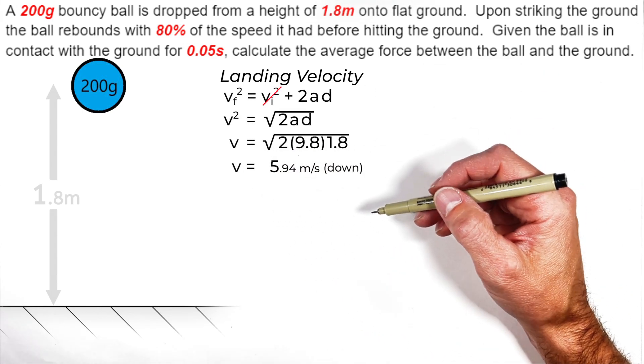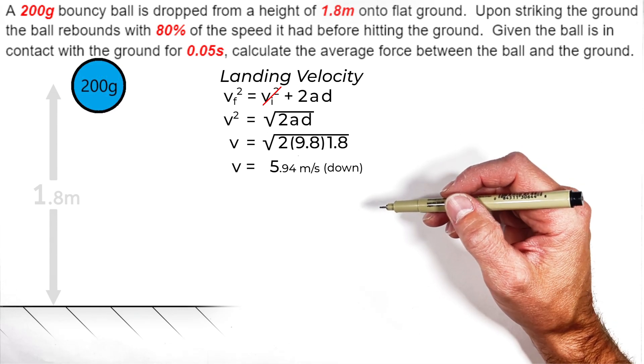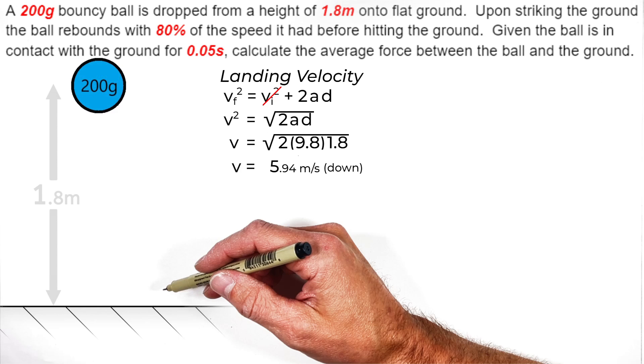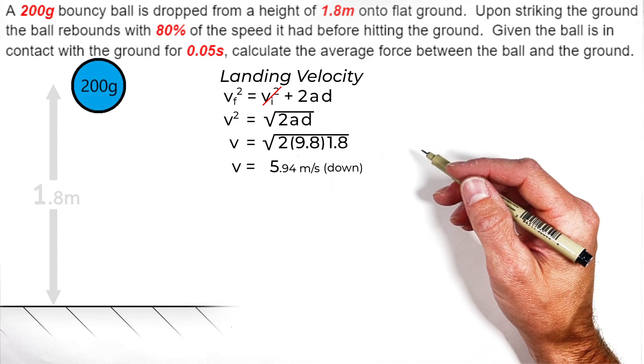What we're going to come up with is the velocity of the ball when it strikes the ground is 5.94 meters per second, and that's downward. Now, the direction is going to be important later on, and I'll explain why when we get there.